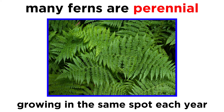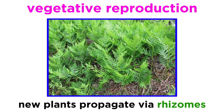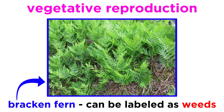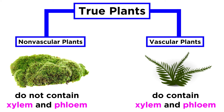Once established, many fern sporophytes are perennial, meaning they will grow in the same spot year after year without having to alternate with the gametophyte generation. Additionally, many fern sporophytes are able to engage in vegetative reproduction, which entails propagating new plants via rhizomes growing in the soil. This reproductive strategy has caused a few species, like bracken fern, to become aggressive weeds in some disturbed areas.